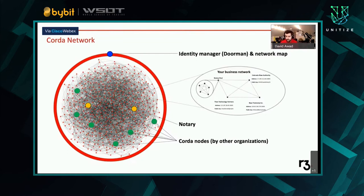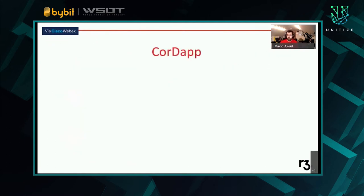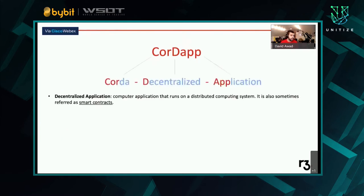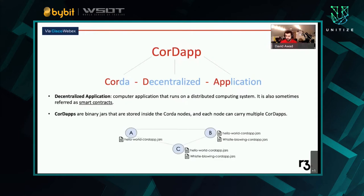So let's start with the basics. A CorDapp — Corda decentralized application — is a computer application that runs on a distributed computing system. It is also sometimes referred to as smart contracts. CorDapps are literal binary jars stored inside of Corda nodes. Any node can carry multiple CorDapps, and those CorDapps that you write are what enable particular features on those Corda nodes — whether that is tracking loans, mortgages, using blockchains for voting, or what have you.